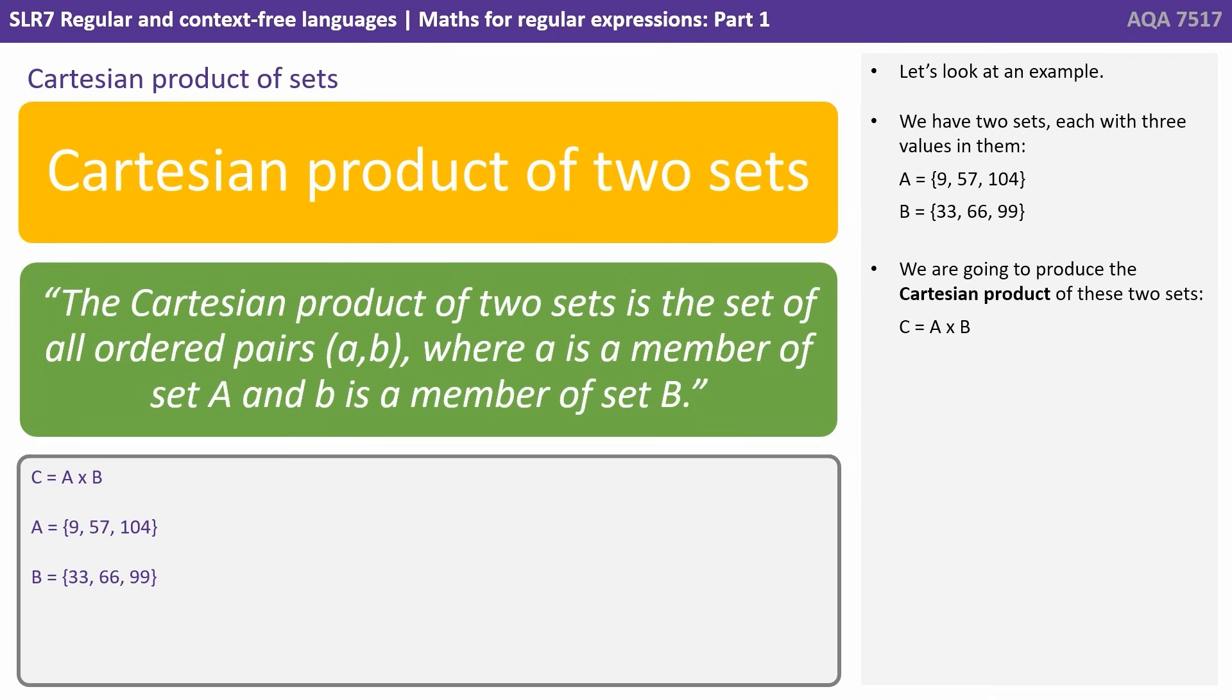Let's look at an example. We have two sets, each with three values in them. Set A has 9, 57, 104 and set B has 33, 66, 99. We are going to produce the Cartesian product of these two sets.